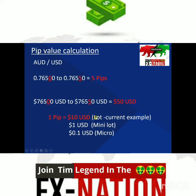If you were to trade smaller than one lot, let's say one mini lot, the same pip would be worth less — one dollar. If you decide to trade the smallest trade size, one micro lot, the same pip would be worth 10 US cents. This is actually the way you can dial up or dial down the risk you're taking in a market. It has nothing to do with leverage.